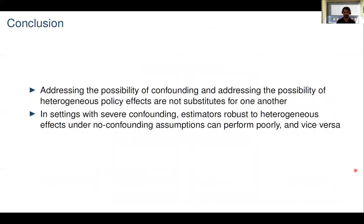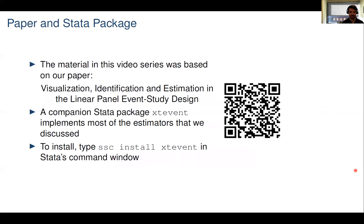To conclude our discussion of treatment effect heterogeneity: our findings highlight that addressing confounding and addressing heterogeneous policy effects are not substitutes for one another. In settings with severe confounding, estimators designed to recover proper weighted averages of heterogeneous effects under no confounding can perform poorly. Likewise, in settings with limited confounding but significant heterogeneity, estimators motivated by homogeneous policy effect models that do allow for confounding can exhibit undesirable behaviors such as spurious pre-trends. That brings us to the end of our series. All material is based on the paper 'Visualization, Identification, and Estimation in the Linear Panel Event Study Design,' available on our websites along with an accompanying Stata package downloadable from SSC. Thank you.